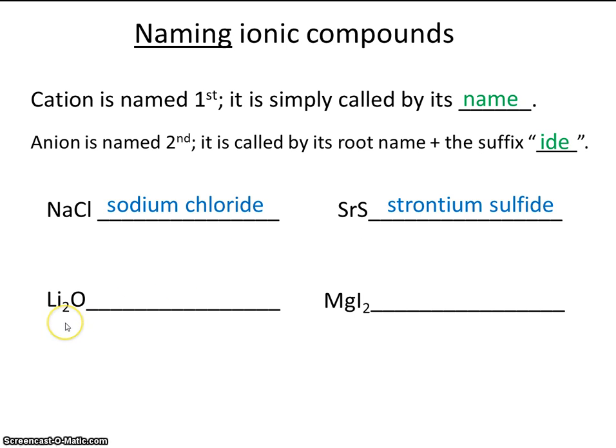In this next example, we have lithium and oxygen. It does not matter how many lithium ions there are. There's two, but that's not relevant here when we provide the name. So the name of this is just lithium oxide. Same thing here. It doesn't matter that we have two iodines. It's simply called magnesium iodide.